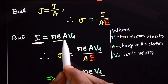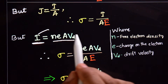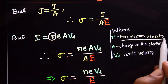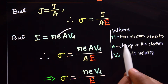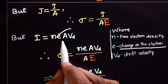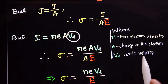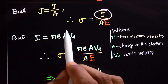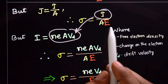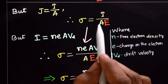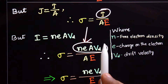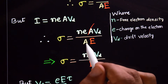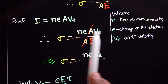We also know that current I equals n·e·A·v_d — the relation between current and drift velocity — where n is the free electron density, e is the charge on the electron, A is the cross-sectional area, and v_d is the drift velocity. We will substitute this expression for I into our equation for sigma.